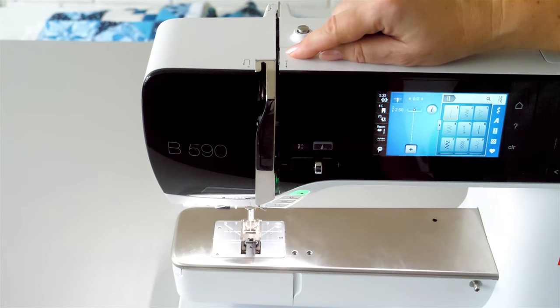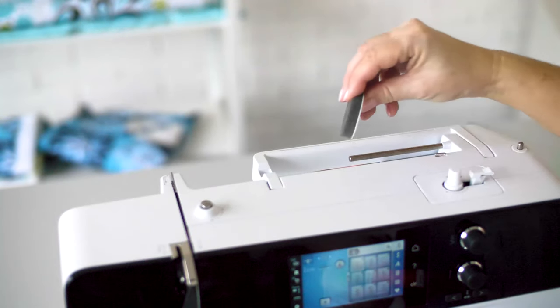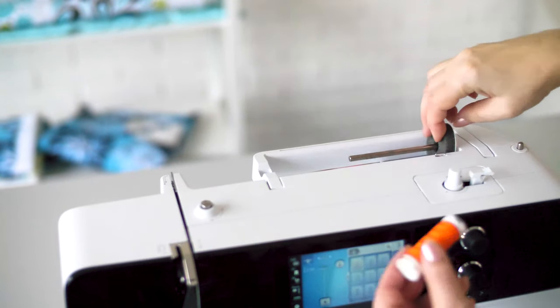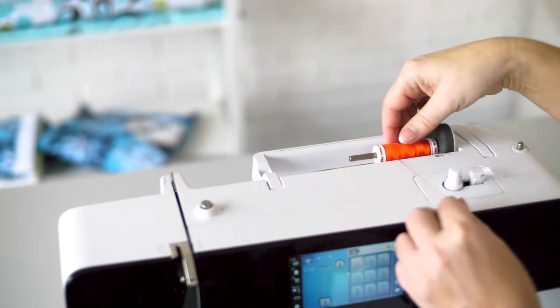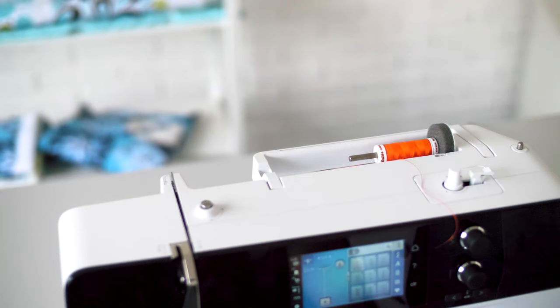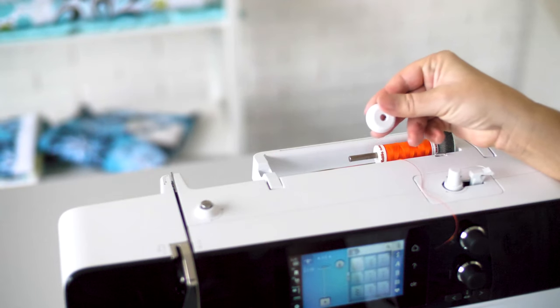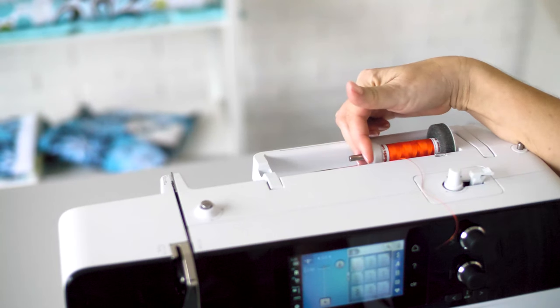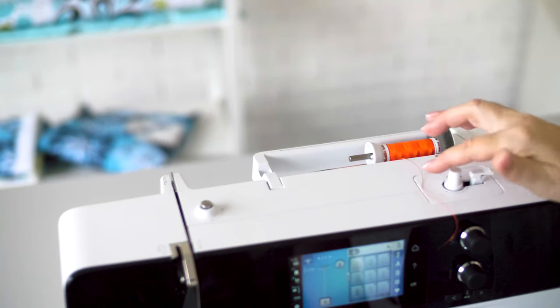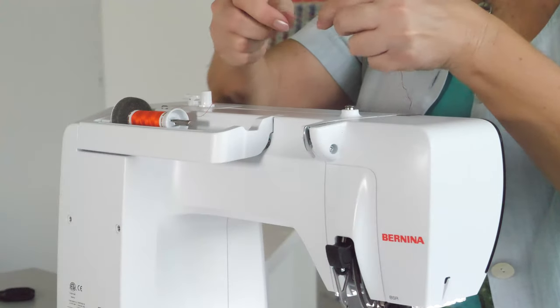First, place the foam pad and then the thread on the spool pin. Fix with the appropriate spool disc so that there is no gap and the thread cannot get tangled anywhere.